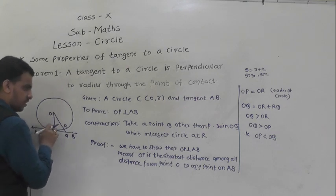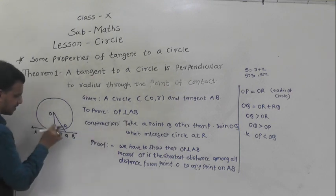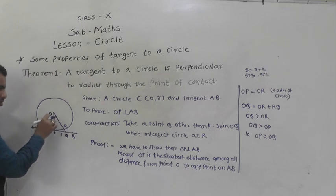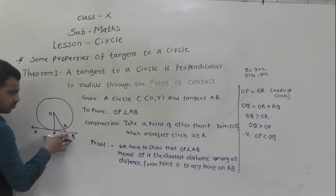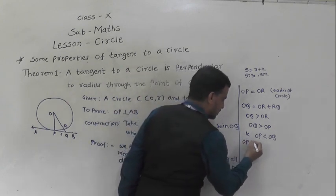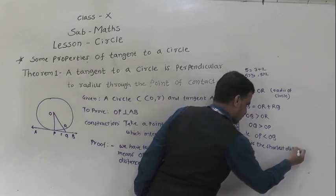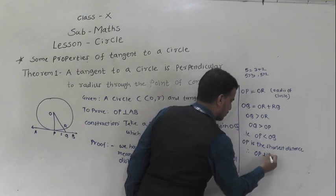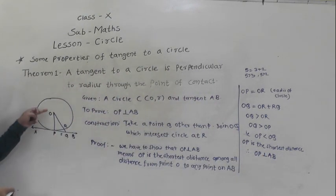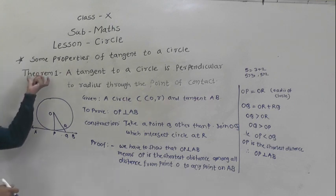Similarly, if we take any other point S on AB, we can prove OP is less than OS. Therefore OP is the shortest distance among all distances from point O to any point on AB. Therefore OP is perpendicular to AB — meaning the radius is perpendicular to the tangent. This completes the first theorem.